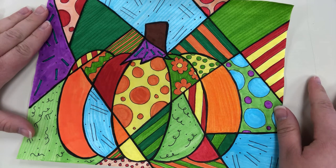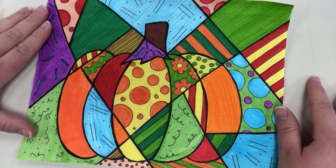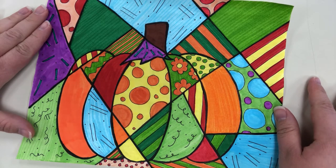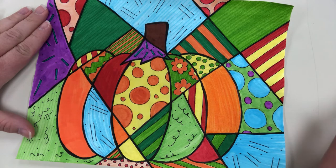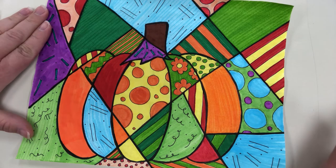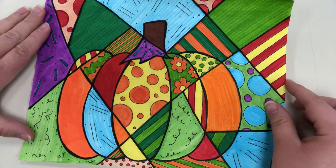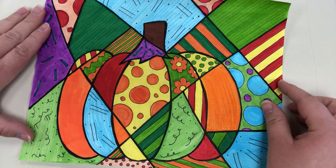A lot of the artists that we talk about lived a long time ago but Romero Brito is a current artist that works in the pop art style. We've talked about how pop art is very bright and colorful. A lot of times it looks like something that you would see in a magazine or an advertisement.